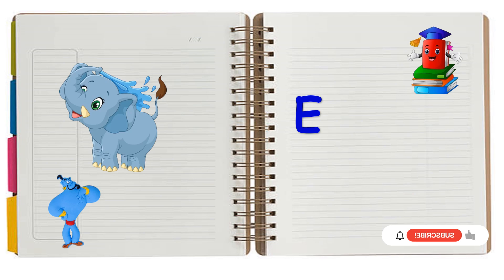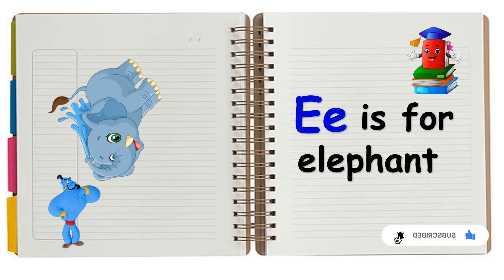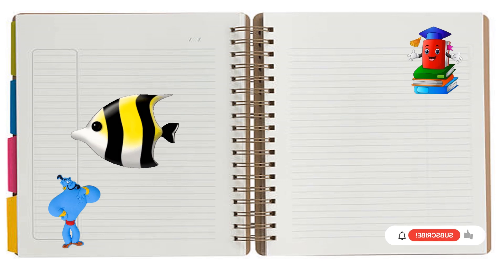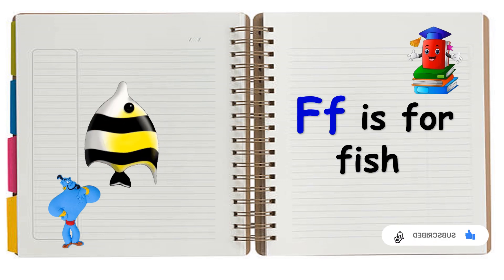E is for Elephant. E, E, Elephant. F is for Fish. F, F, Fish.